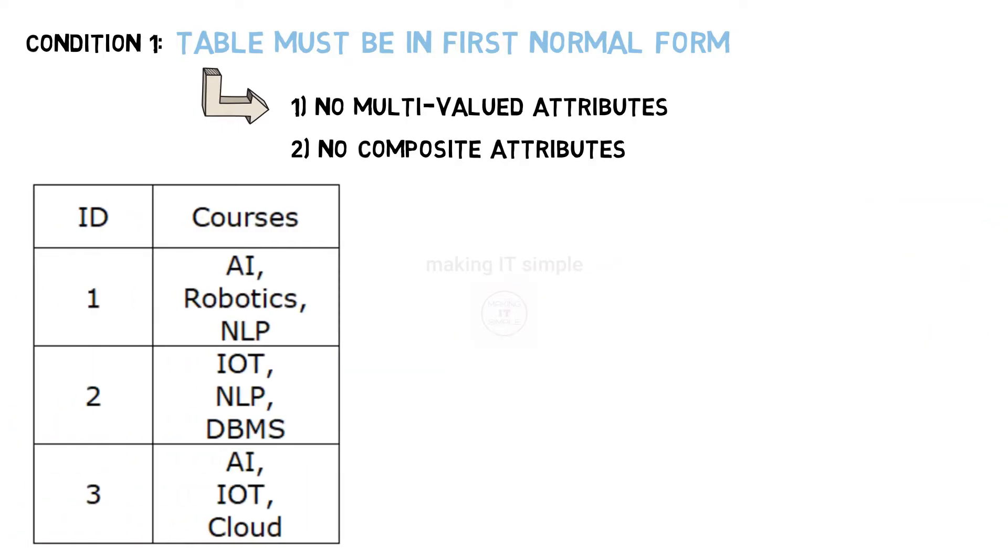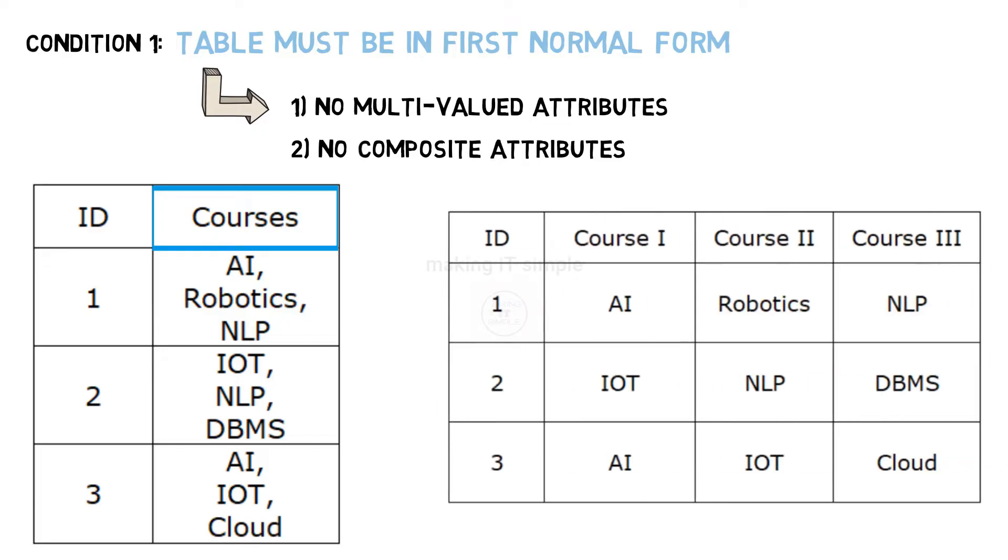Is this table in 1NF? Answer again is no. Courses attribute is multivalued. Again to solve it we can make these following changes. And then we can say it is in 1NF.